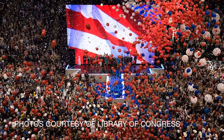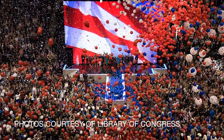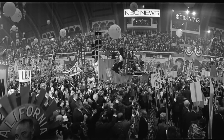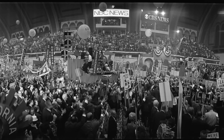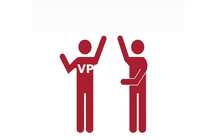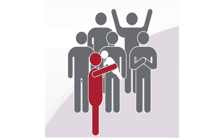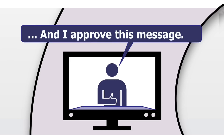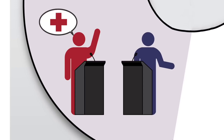After the primaries and caucuses, each major party — Democrat and Republican — holds a national convention to select a presidential nominee. The party's presidential nominee then announces his or her choice for vice president. The presidential candidates campaign throughout the country to win the support of the general population.